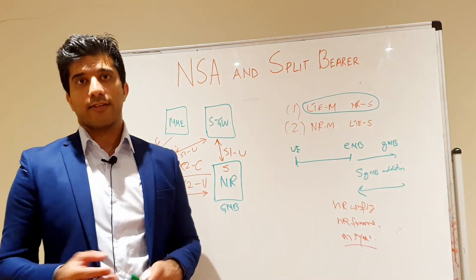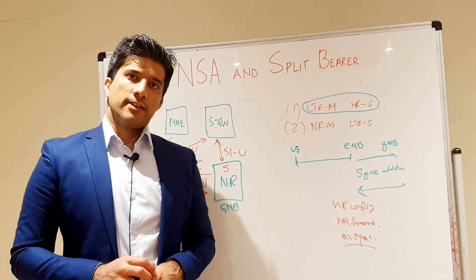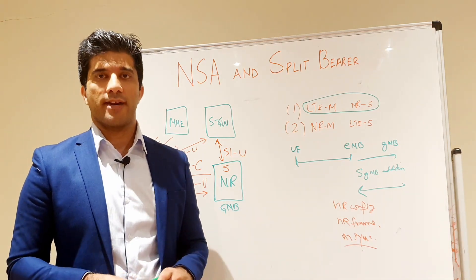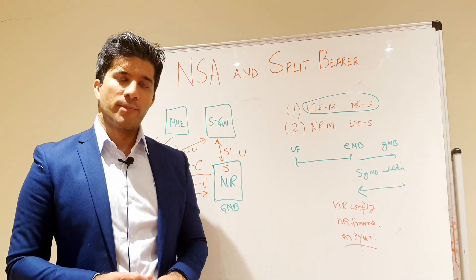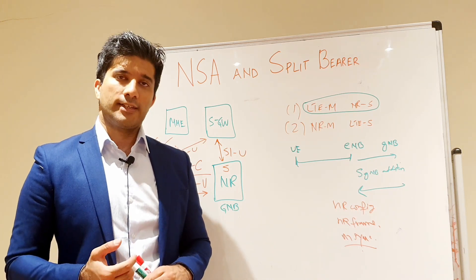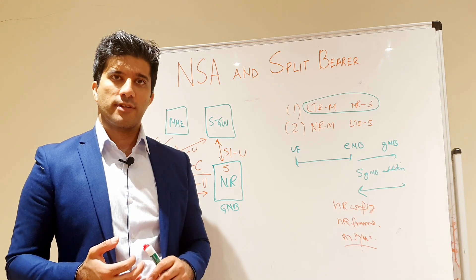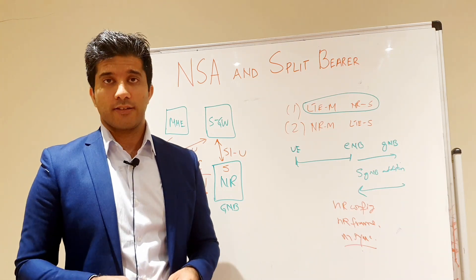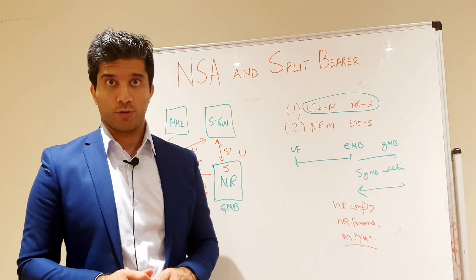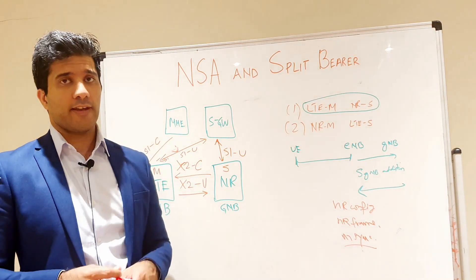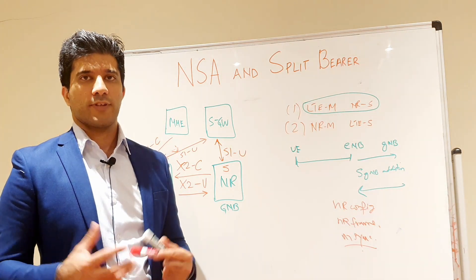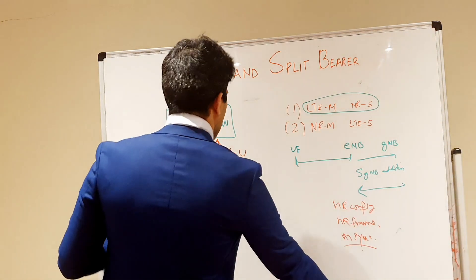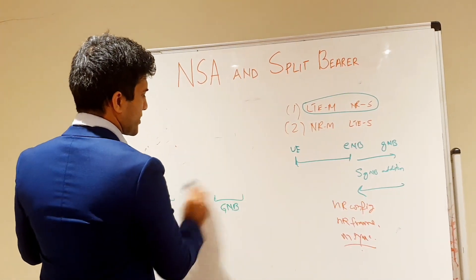Another thing to consider is how the secondary node is added after the primary cell is established. In LTE there are three options: first, with synchronization and new security information; second, with synchronization and no security information; and third, a blind reconfiguration to the 5G node. All three of these methods are used in current networks and depend on the density and settings configured in the network.